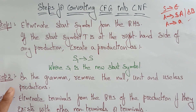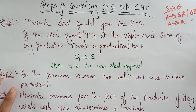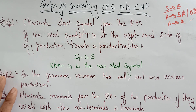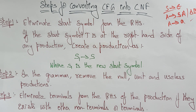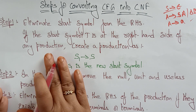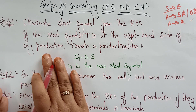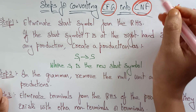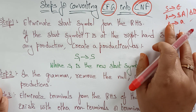If a grammar is not in CNF — that is, it is only generating a single symbol, or it is generating a terminal with a non-terminal — then you can say that the grammar is not in CNF. Let's see the steps for converting the context-free grammar into Chomsky normal form.